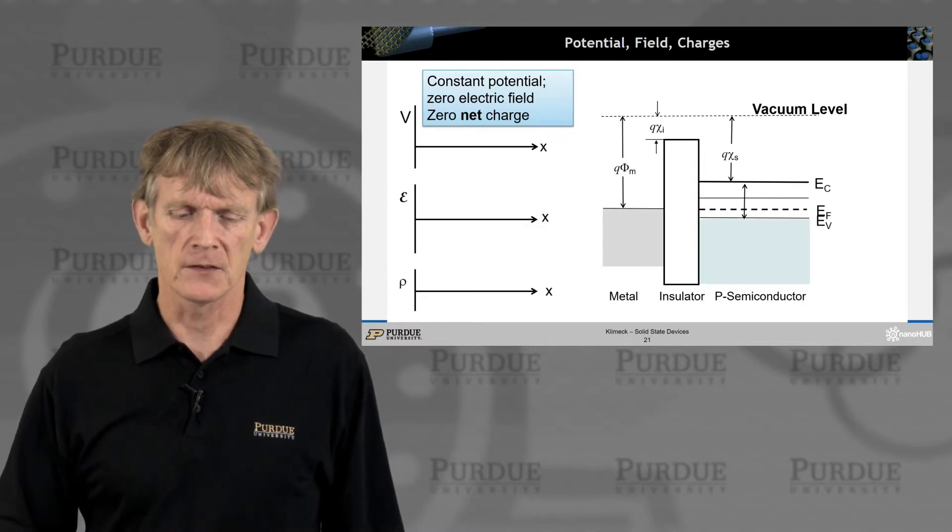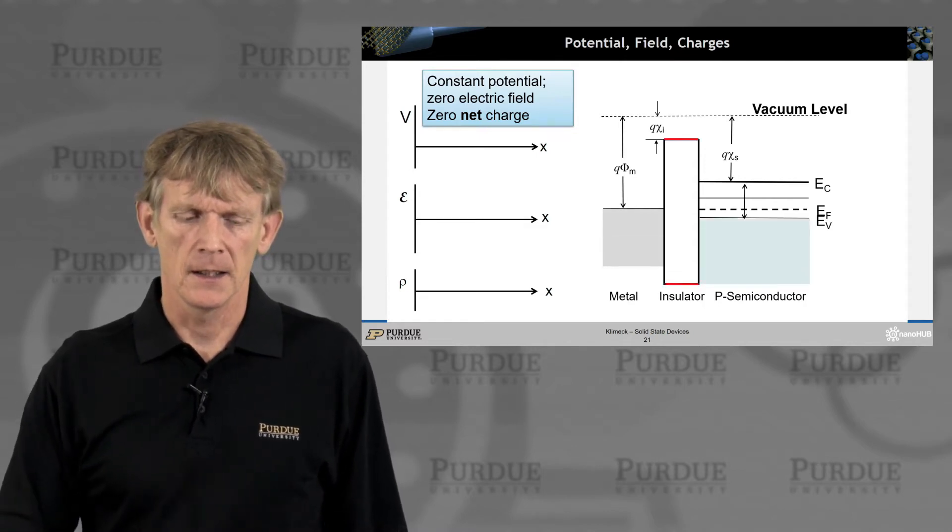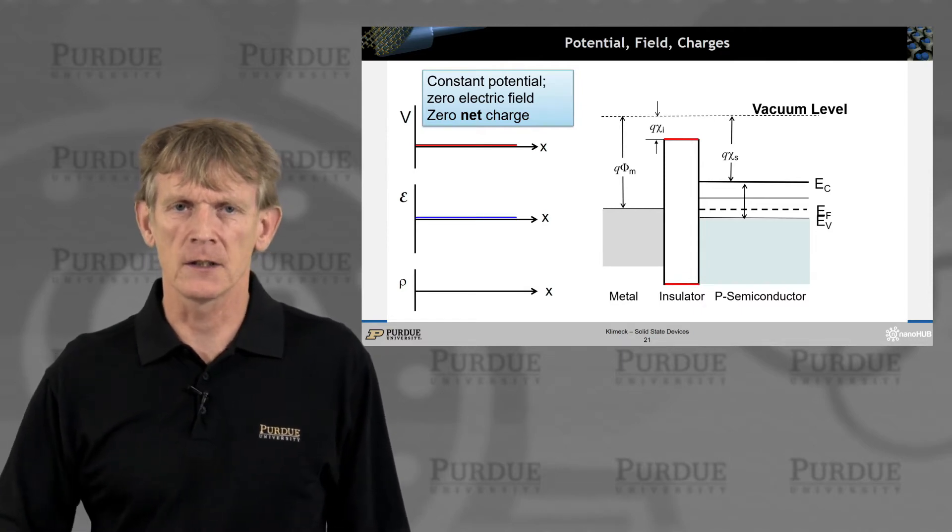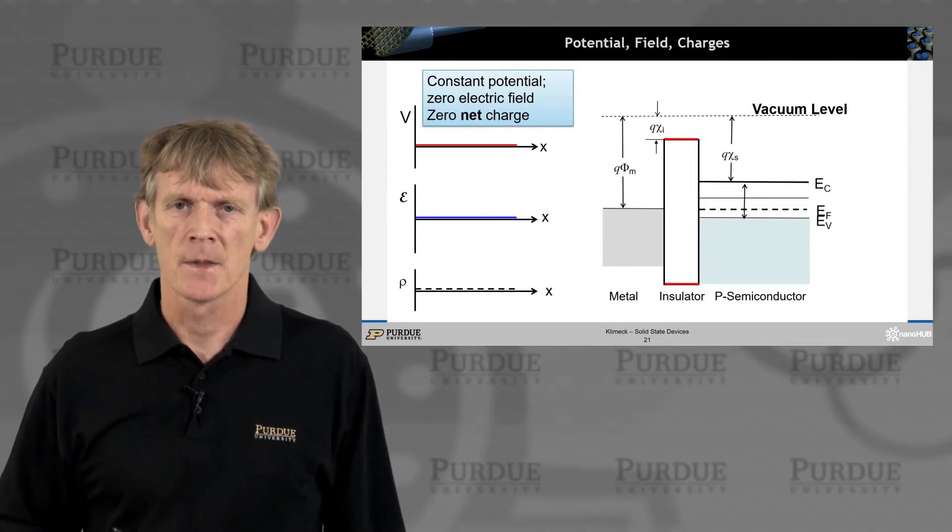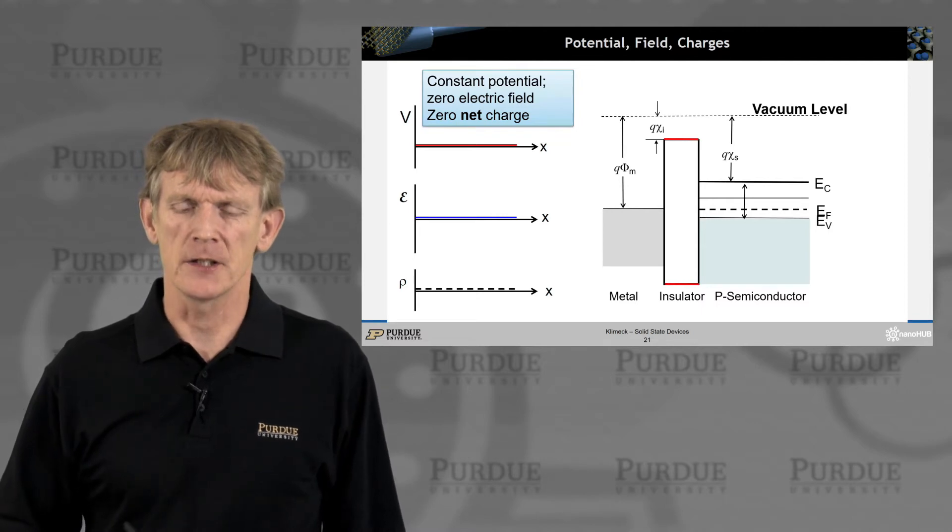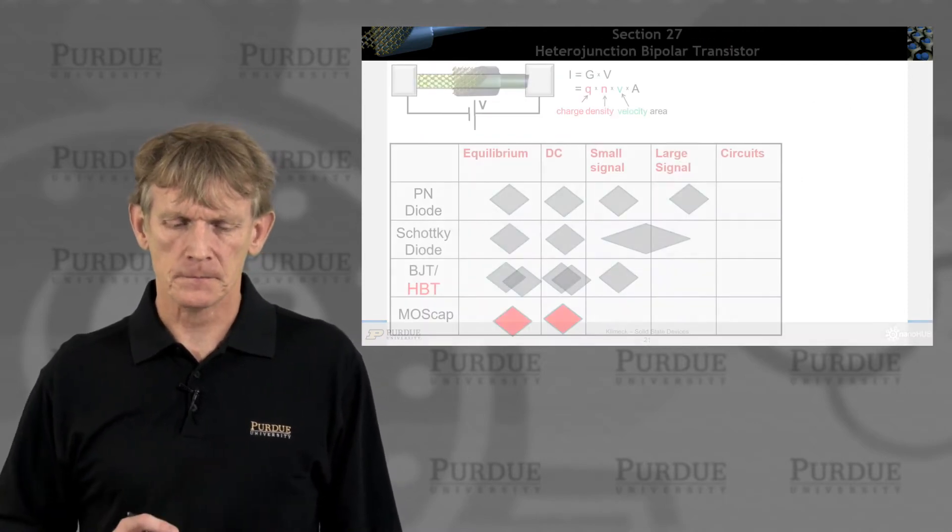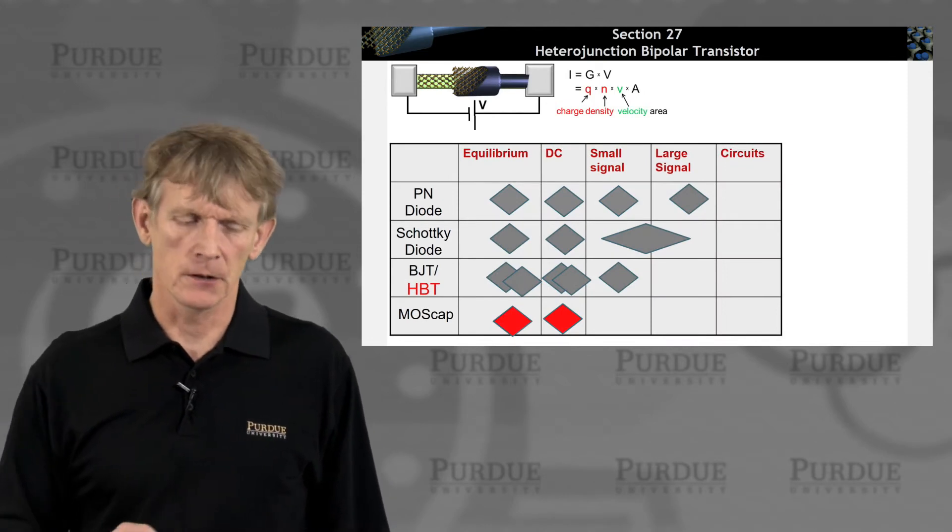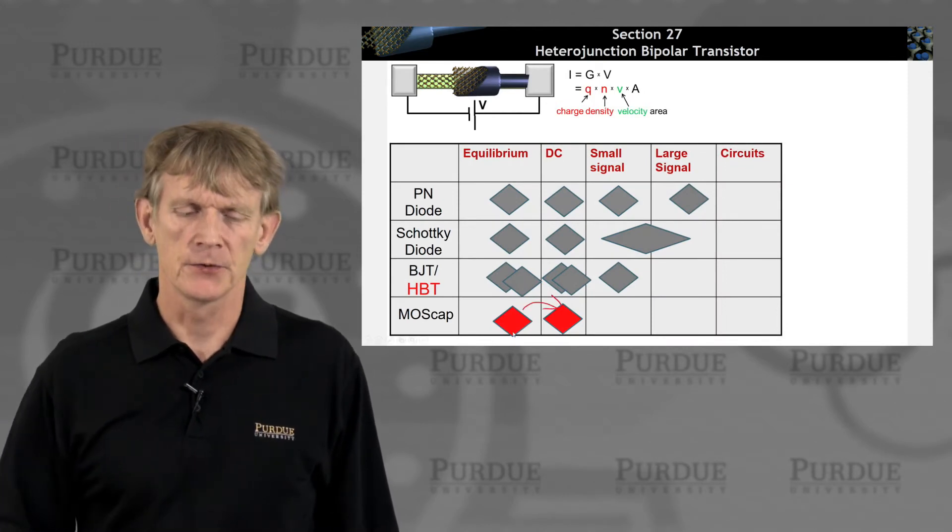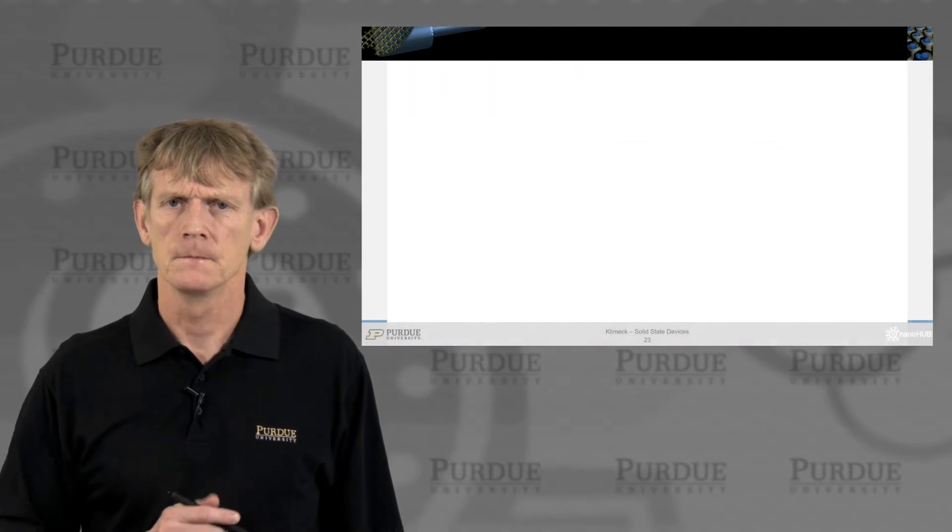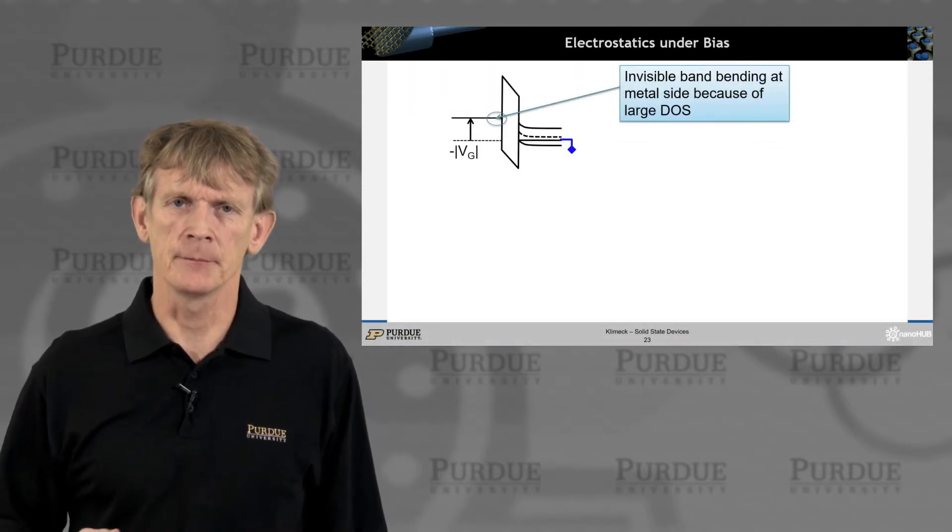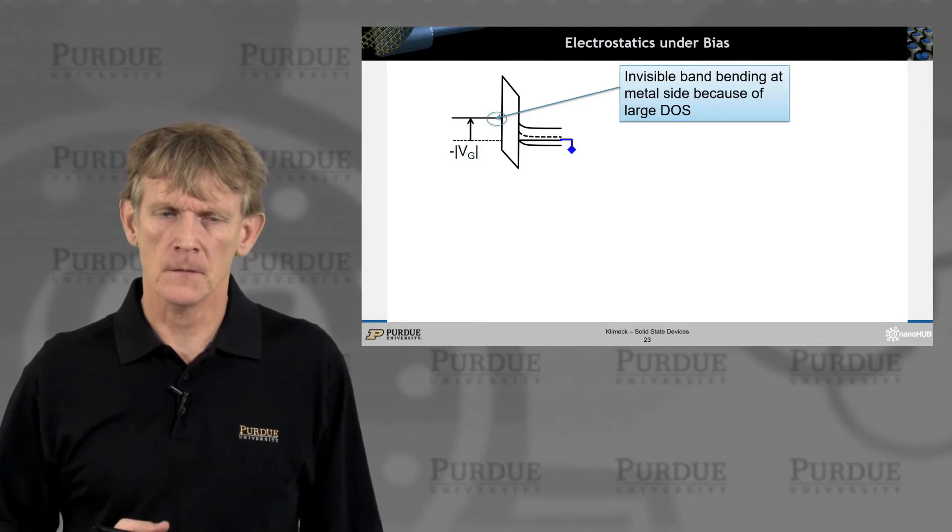So it's a repeat of the slide before, and you have flat potentials, flat electric field, and flat free charges. So now we're going to apply a voltage, and we're going from equilibrium to some DC voltage. If that's the case, we will have band bending.